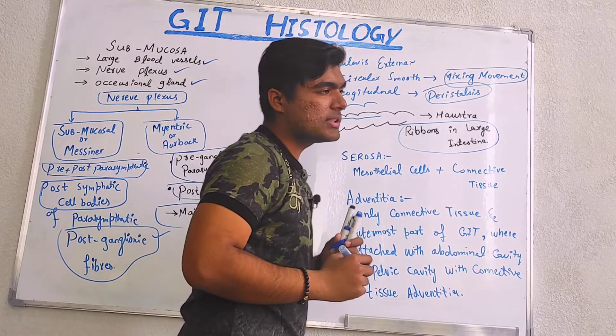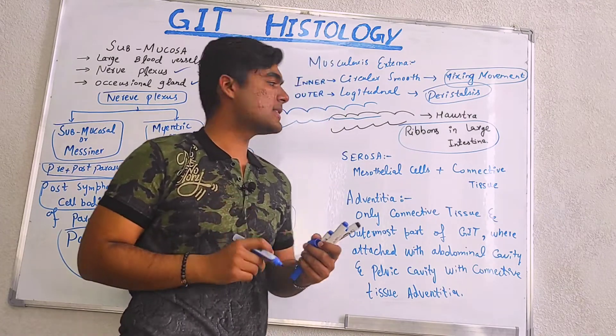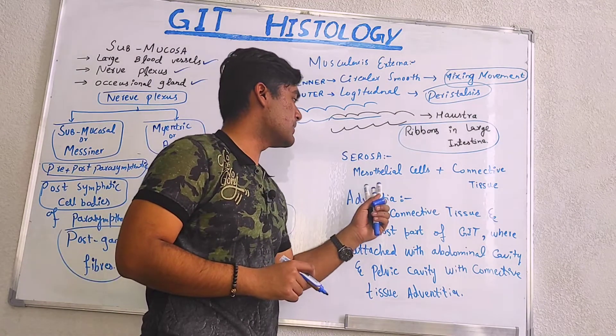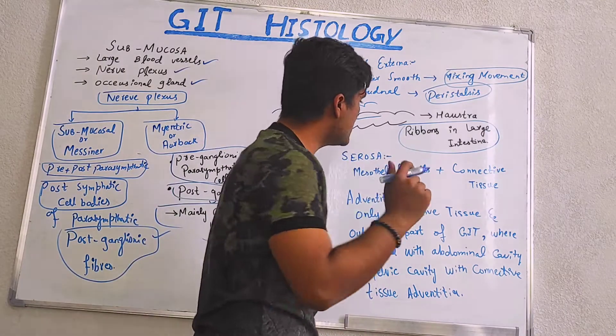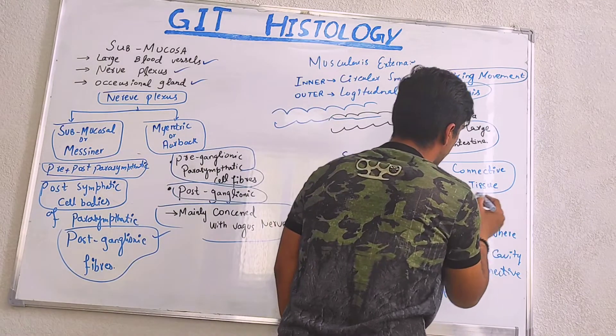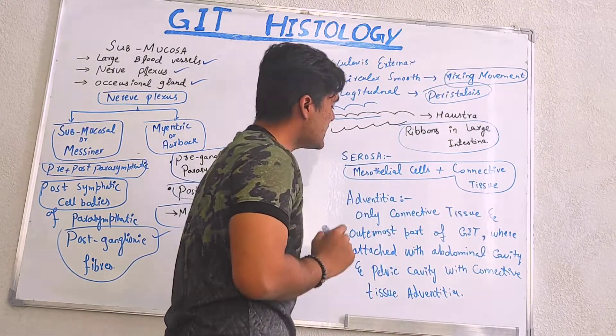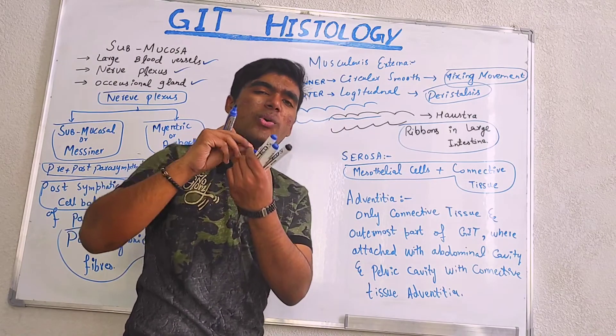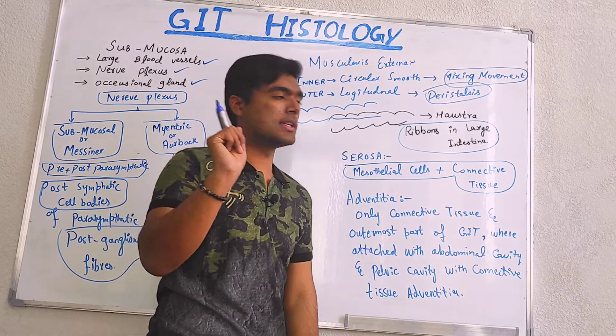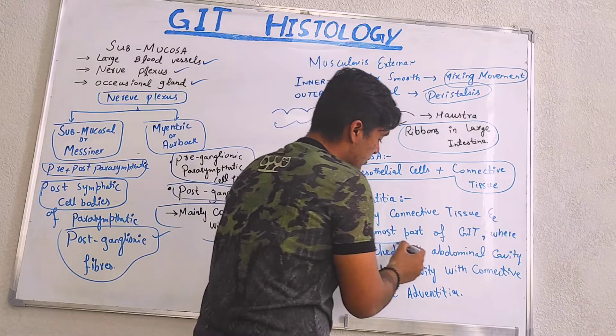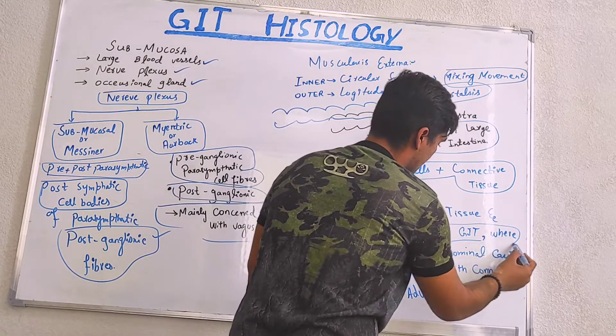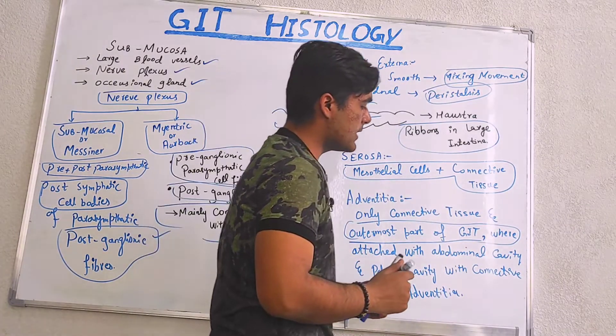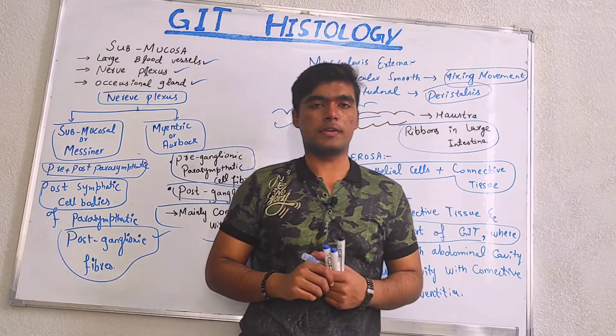Talking about the last layer which is basically the outermost serosa and adventitia. Serosa contains mesothelial cells plus connective tissue, and adventitia is made up of only connective tissue, no mesothelial cells. Outermost parts of GIT and it is attached with abdominal cavity, pelvic cavity, and with connective tissue of adventitia.